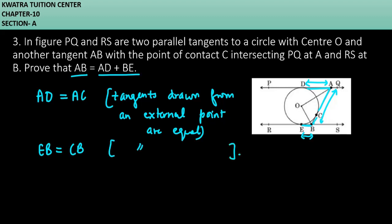They are meeting at one external point that is B. Yes, EB and CB will be exactly the same. So if we look at AD and BE and AC and CB, they will be exactly the same.